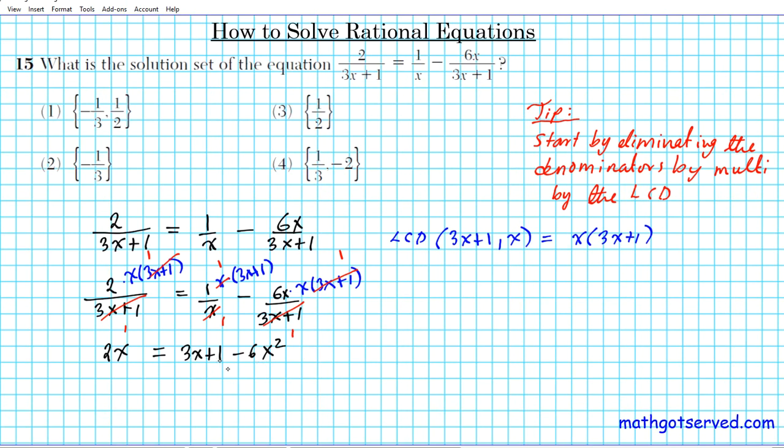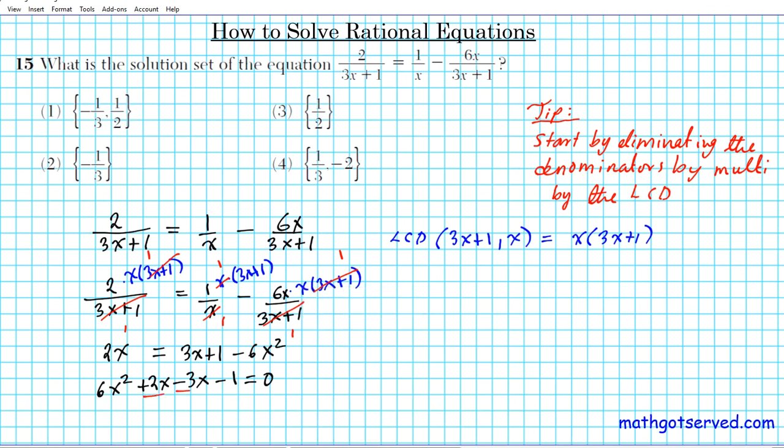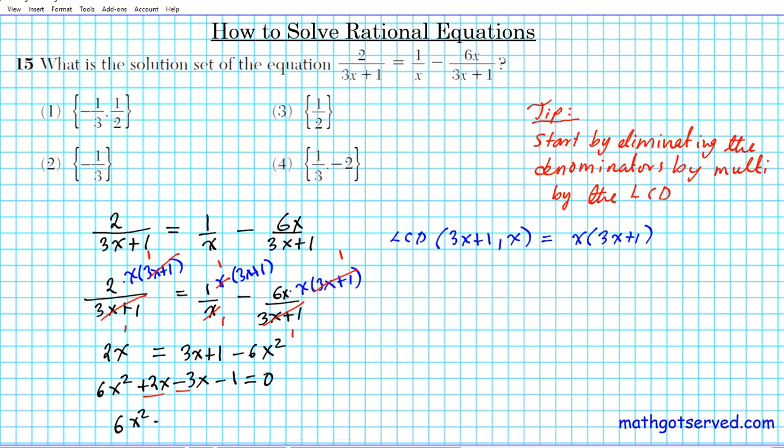What we're going to do is place it in standard form, terms in descending order of degrees equal to 0. Add 6x squared to both sides, so we have 6x squared, then plus 2x, subtract 3x from both sides, and then subtract 1 from both sides, set it equal to 0, which I'll go here to place it in standard form.